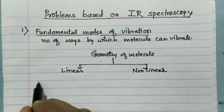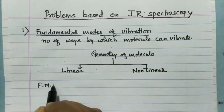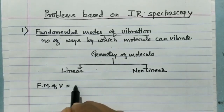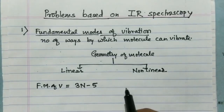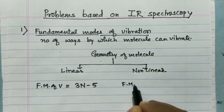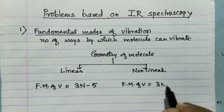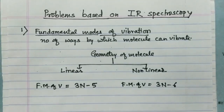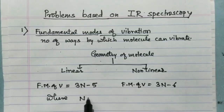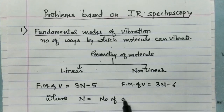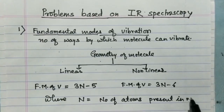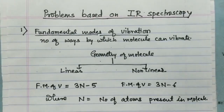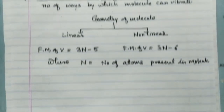For a linear molecule, fundamental modes of vibration = 3n − 5, and for a nonlinear molecule, fundamental modes of vibration = 3n − 6. These are the formulas by which you can easily find out the number of modes of vibration, where n is the number of atoms present in the molecule.